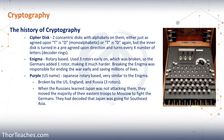Which brings us to Purple. Purple is the US name for a Japanese rotary-based system very similar to the Enigma. It was broken by the US, the UK, and Russia. It had three rotors, just like the Enigma did early on — and as we know from the Enigma, three rotors was easy to break. When Russia broke the encryption and learned that Japan was not planning to attack Russia, they moved the majority of their Eastern Front troops to Moscow to fight the Germans, because they knew they were not a target. They had decoded several messages saying Japan was going for Southeast Asia.